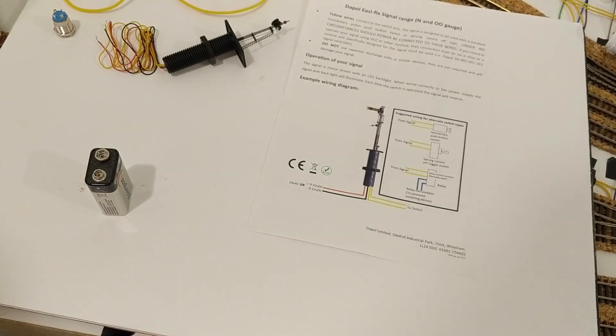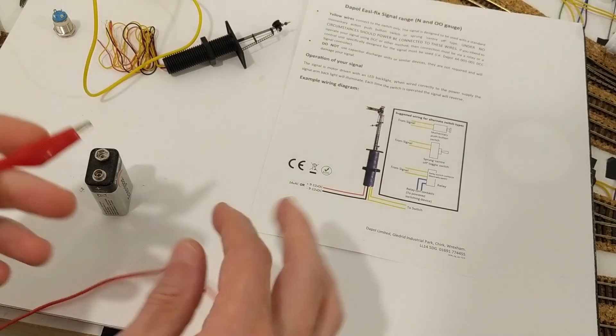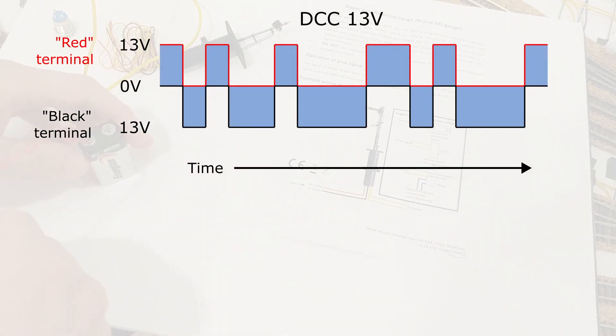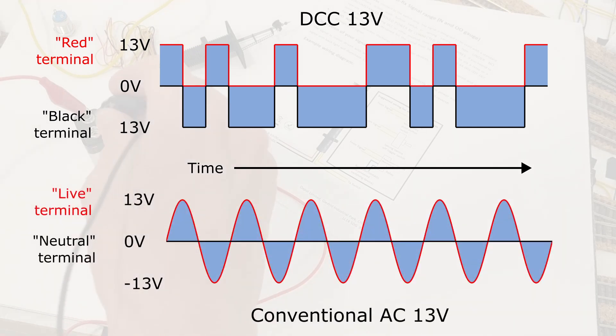On AC it says it needs up to 14V. That's pretty close to the 13V that my GaugeMaster DCC system outputs, but although the direction of the current alternates to form the DCC signal, its voltage is constant, whereas conventional AC voltage varies in a sine wave, so over time for any particular voltage rating the DCC system is going to deliver more power than conventional AC. So I decided not to try that for the power source.